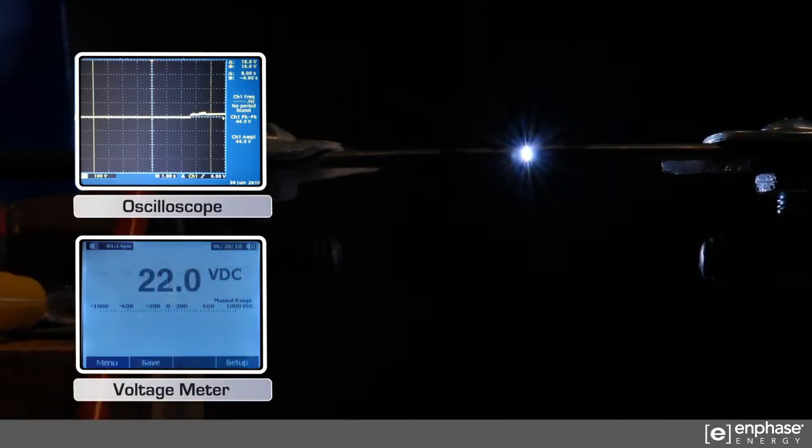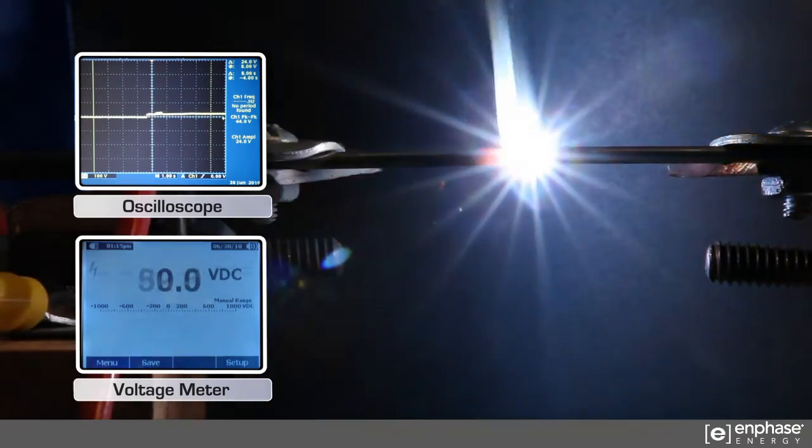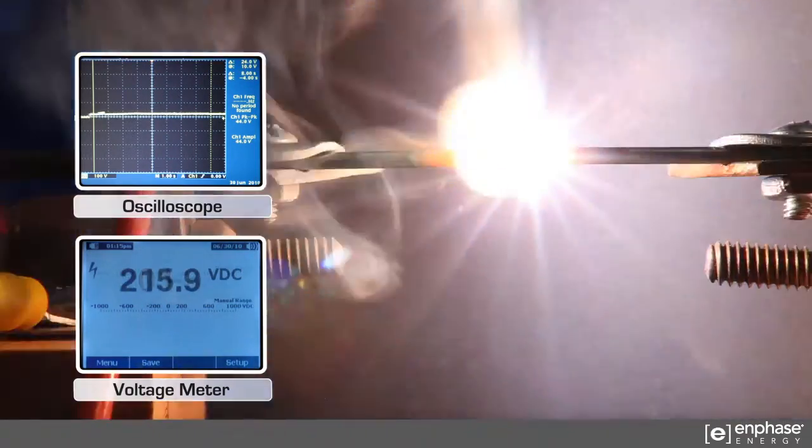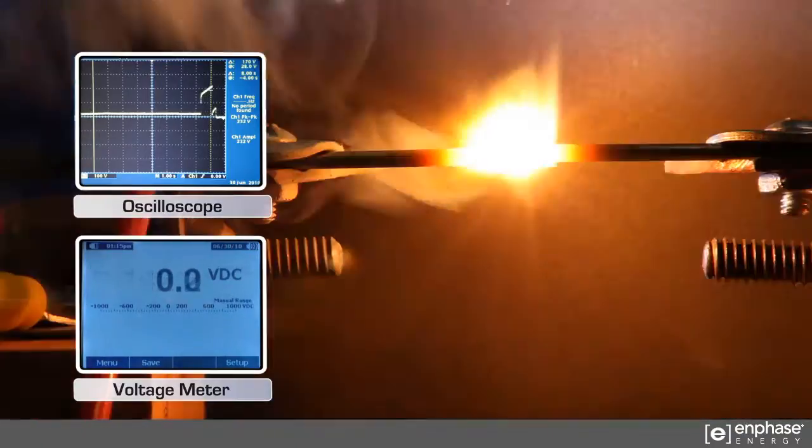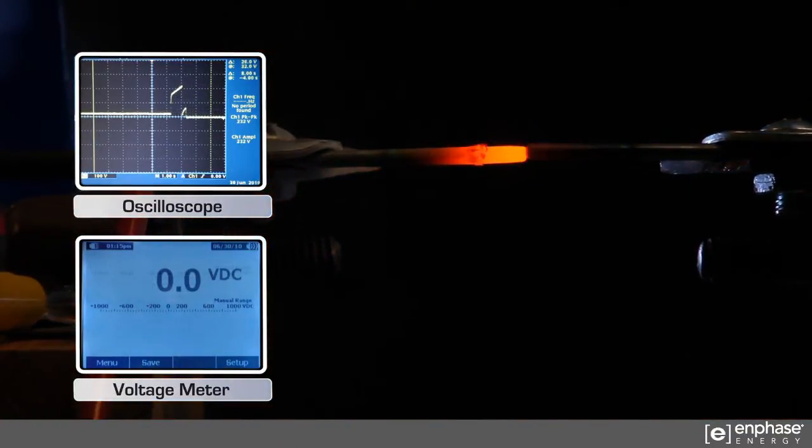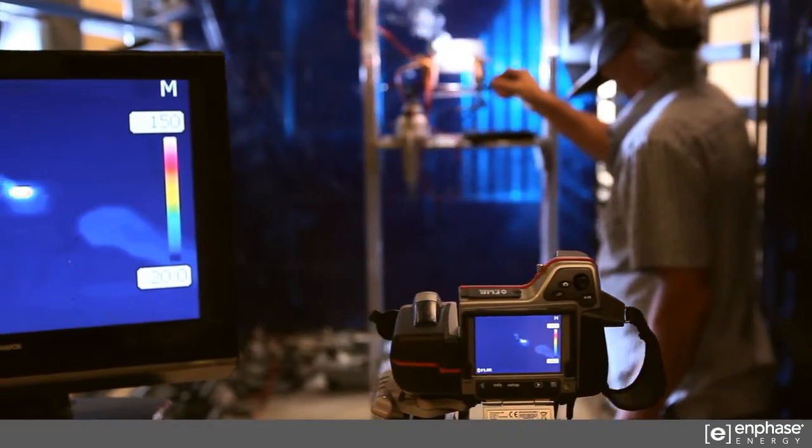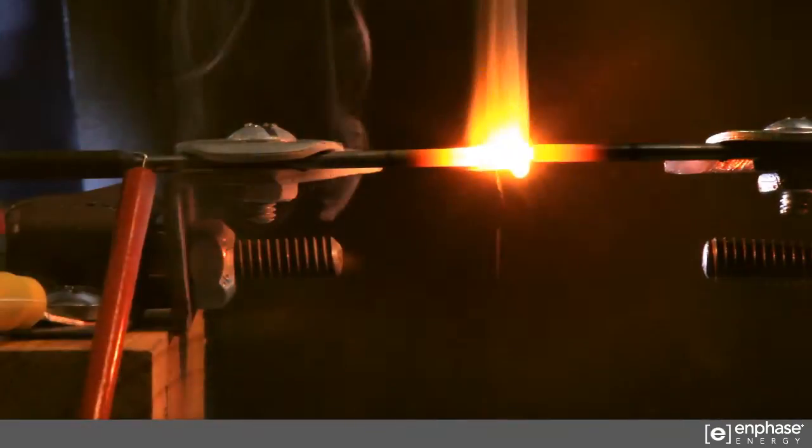As we establish an arc by simulating a wiring fault, the arc gets hotter and hotter. Temperatures can reach up to 4200 degrees centigrade. This is hot enough to melt tungsten.